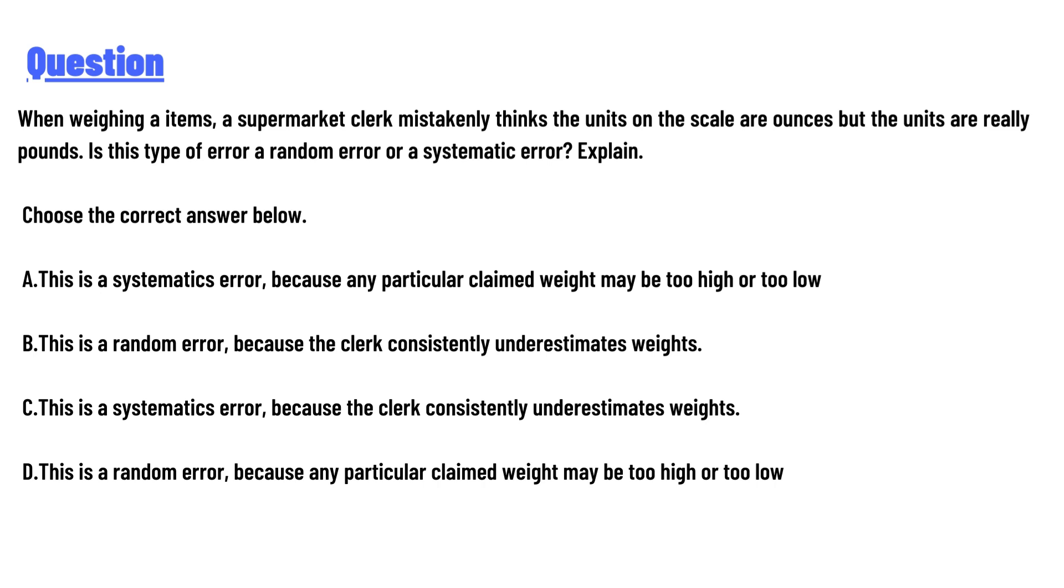B: This is a random error because the clerk consistently underestimates weights. C: This is a systematic error because the clerk consistently underestimates weights. D: This is a random error because any particular claimed weight may be too high or too low.